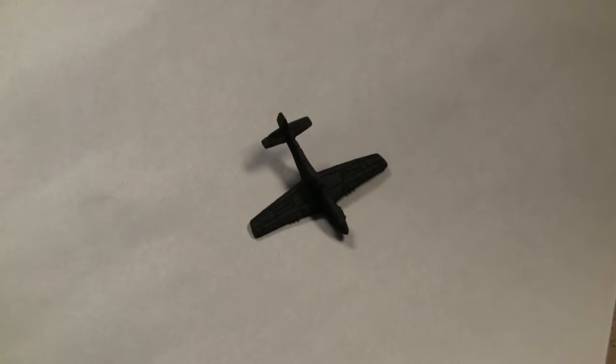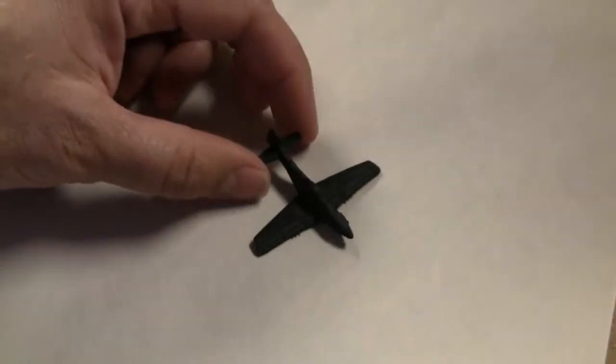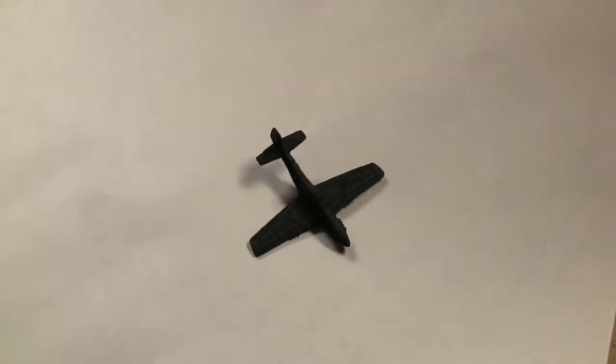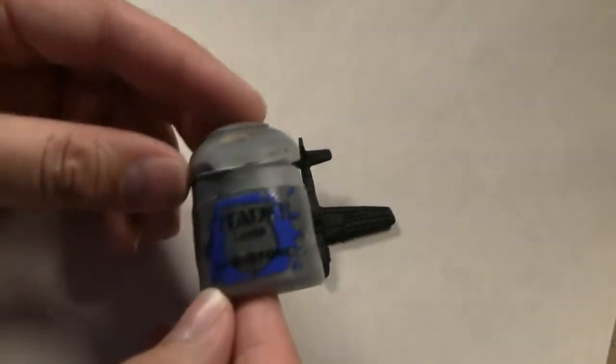Here is our little P-51D Mustang. What you want to do first is prime it in a dark color. I've used Chaos Black from Games Workshop Citadel line of paints, but the exact color does not really matter. It just needs to be a dark color.